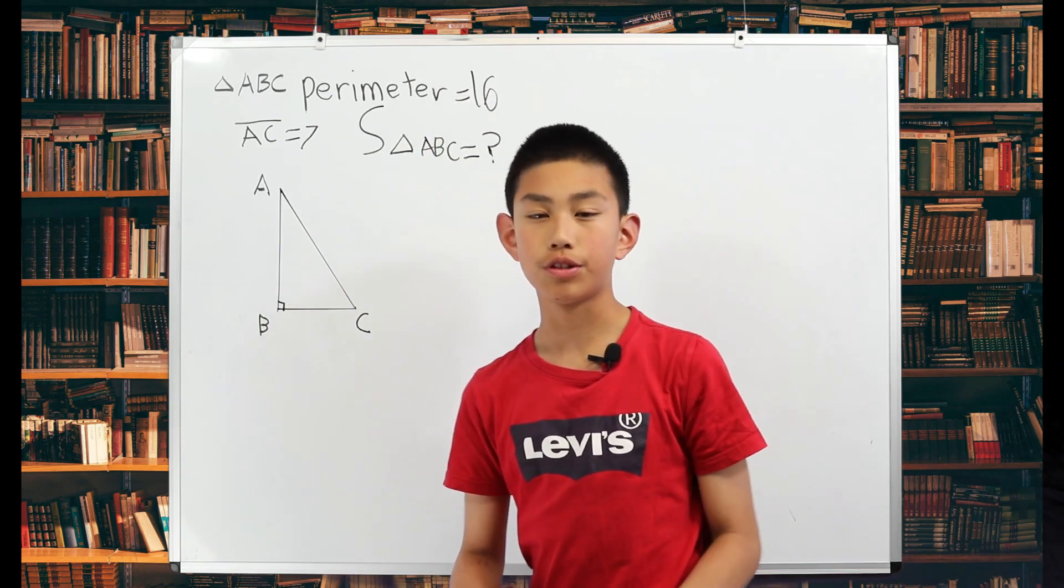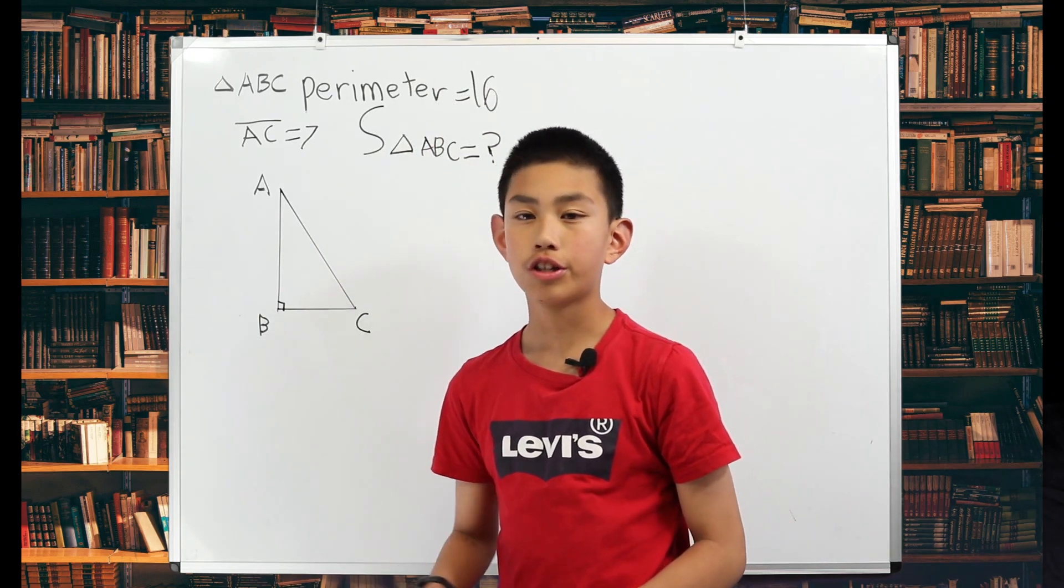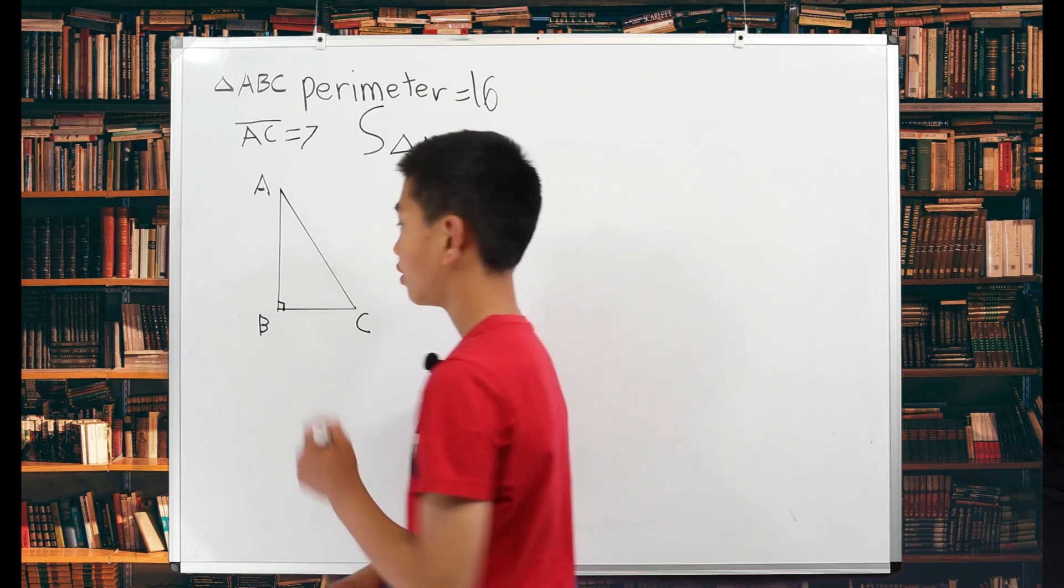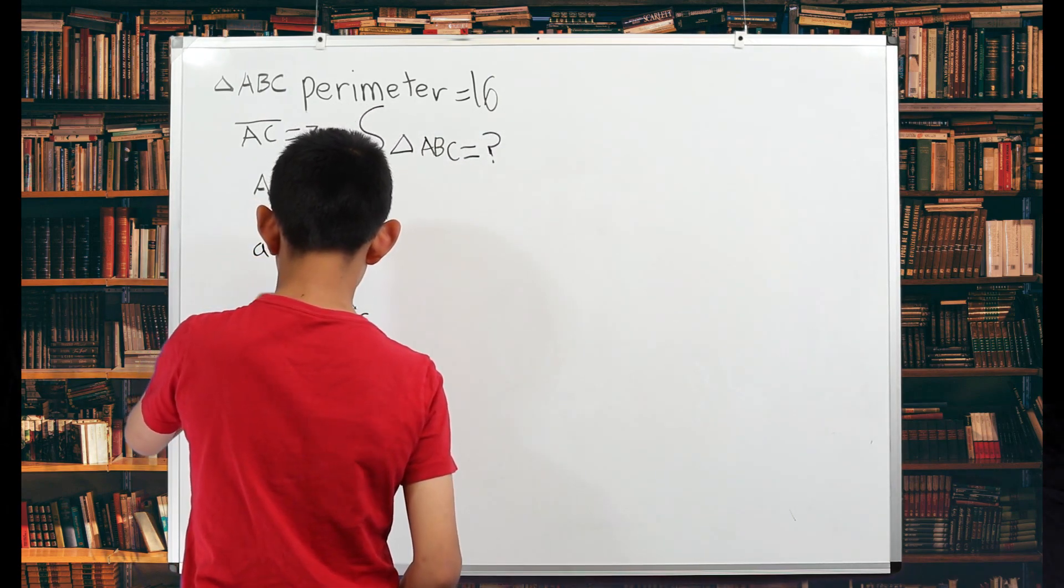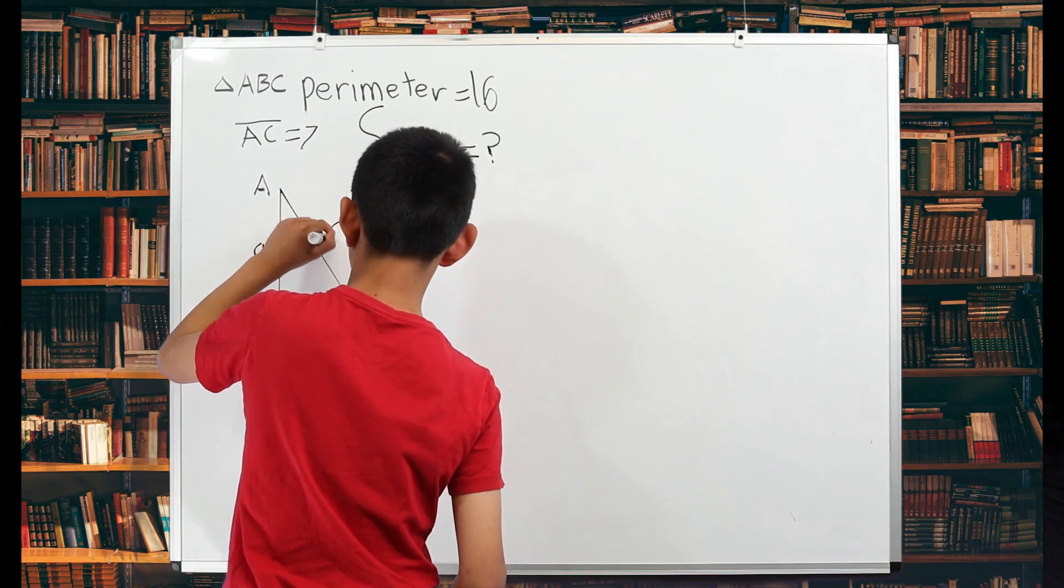So first thing we do is we assign algebraic values to each side. So this side is going to be A, this side is going to be B, and this side is going to be C.